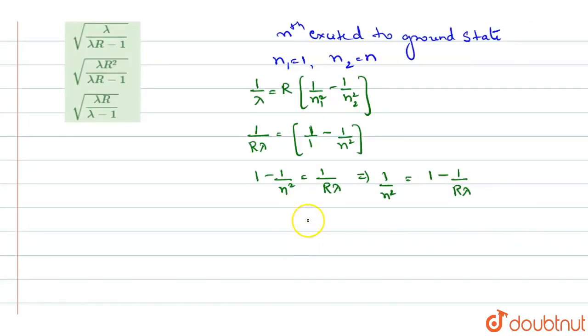Now, taking over the LCM, you get 1 by N square as R lambda minus 1 by R lambda. And so, N, when you are taking it, taking the reciprocal of it,